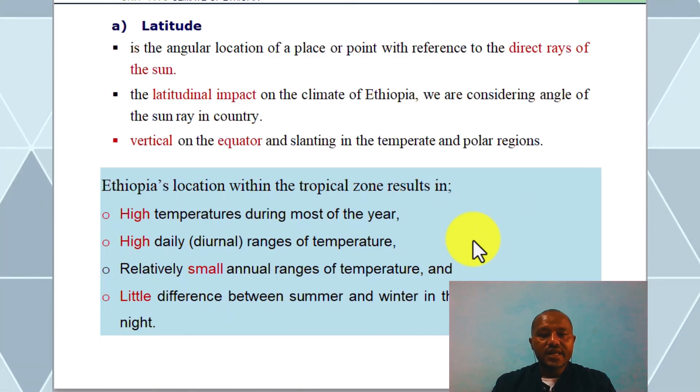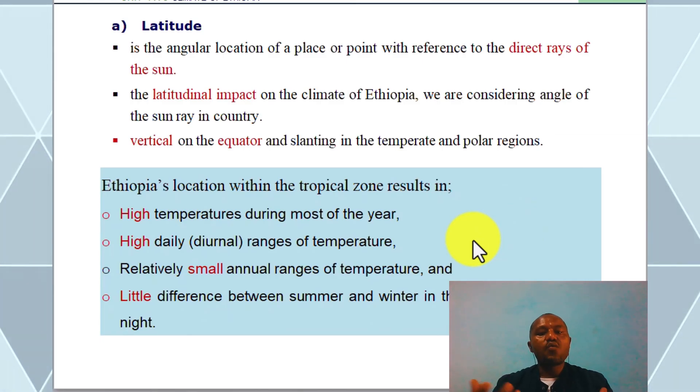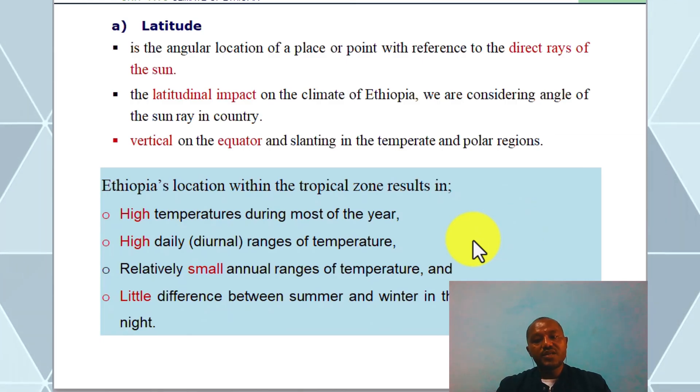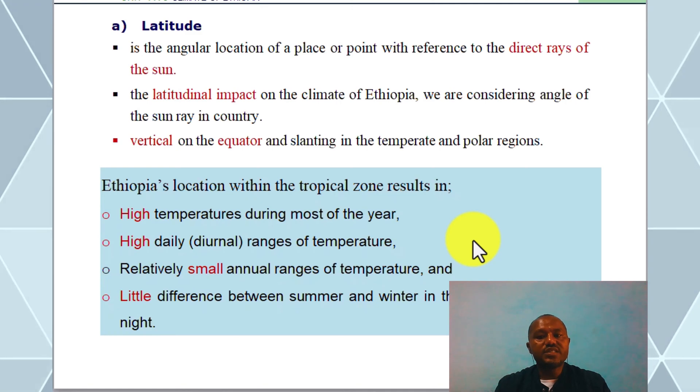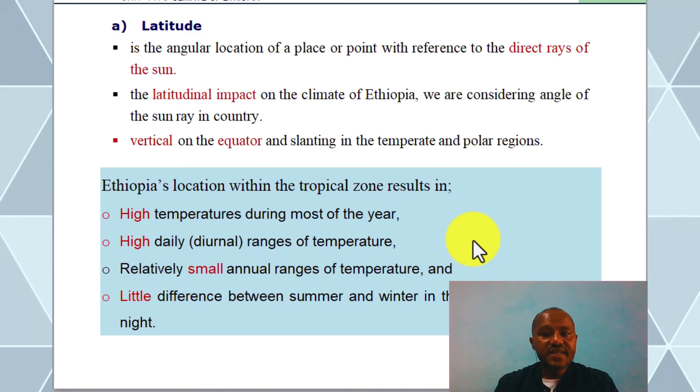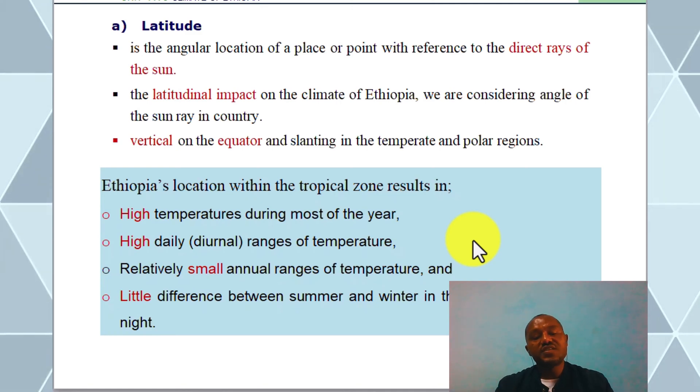Latitude is the angular location of a place or point, which is referring to the direct rays of the sun.